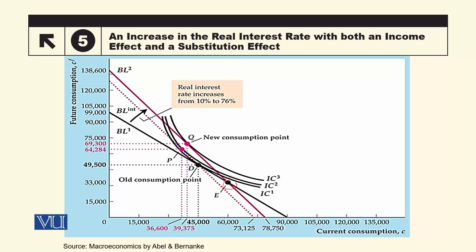یہ graph — اس میں تین budget lines ہیں: ایک black، ایک red، اور ایک dotted line۔ Black اور red دونوں میں common یہ ہے کہ دونوں E point میں سے گزر رہے ہیں۔ E point وہ no-borrowing اور no-lending point ہے — چونکہ اسے نہ borrow کرنے کی ضرورت ہے نہ وہ lend کر سکتا ہے، whatever is the interest rate this point will remain available to the consumer۔ یہ e point دونوں budget lines BL1 اور BL2 پر موجود ہے۔